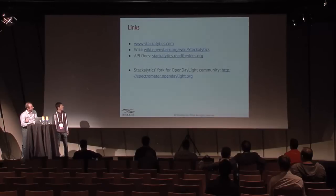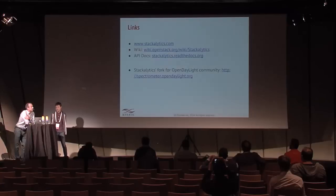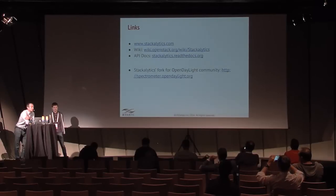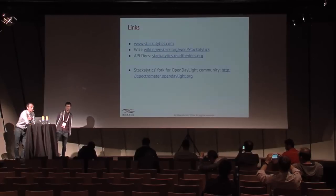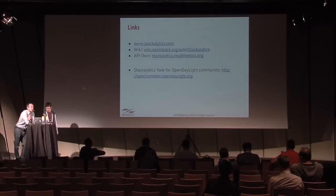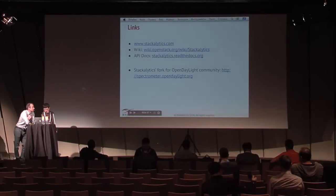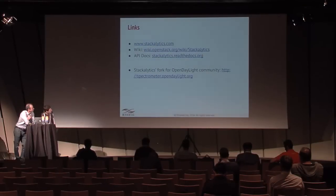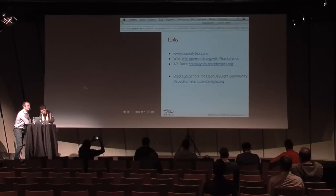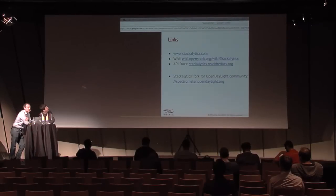Not all reports are integrated into Stackalytics directly — it's much easier to make a Google Spreadsheet that queries the Stackalytics JSON API and shows tables and charts on top. For example, we implemented statistics on the number of core reviewers per company in this way. The trick is that you don't need to make any changes in Stackalytics itself — all data manipulation is done within Google Docs.